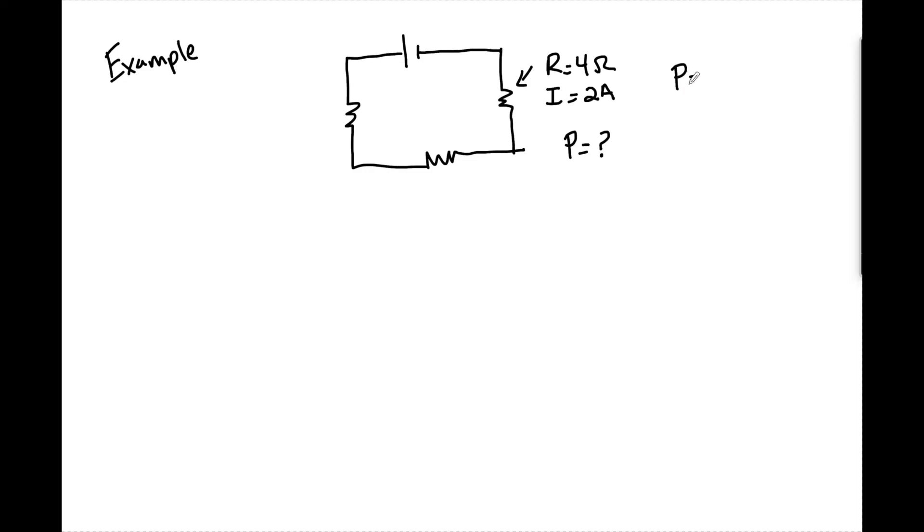Now we would look traditionally and we'd say P equals VI. That's on our reference table but we don't know what V is in this case. So we'd have to go and say what do we know V equals? Well P equals V equals IR from Ohm's law times the I. So now we're caught in a situation where we just have two amps squared times four and that's going to be equal to 16 watts.